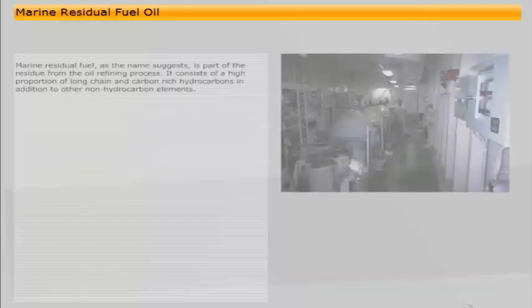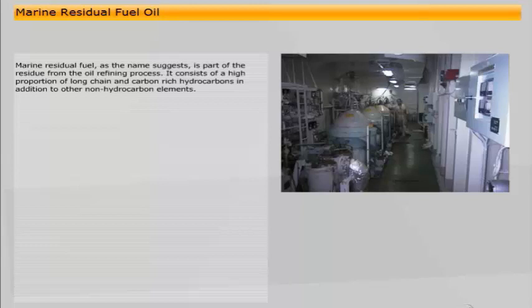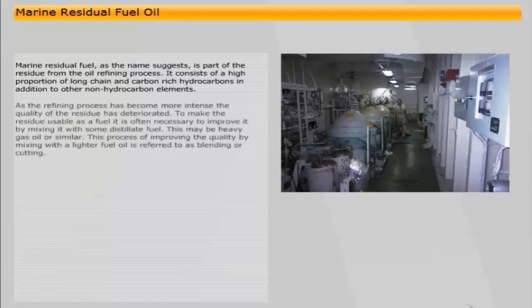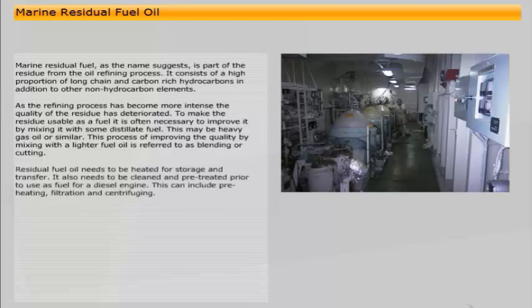Marine residual fuel, as the name suggests, is part of the residue from the oil refining process. It consists of a high proportion of long chain and carbon-rich hydrocarbons in addition to other non-hydrocarbon elements. As the refining process has become more intense, the quality of the residue has deteriorated. To make the residue usable as a fuel, it is often necessary to improve it by mixing it with some distillate fuel, such as heavy gas oil. This process of improving the quality by mixing with a lighter fuel oil is referred to as blending or cutting. Residual fuel oil needs to be heated for storage and transfer, and also needs to be cleaned and pretreated prior to use, including preheating, filtration and centrifuging.